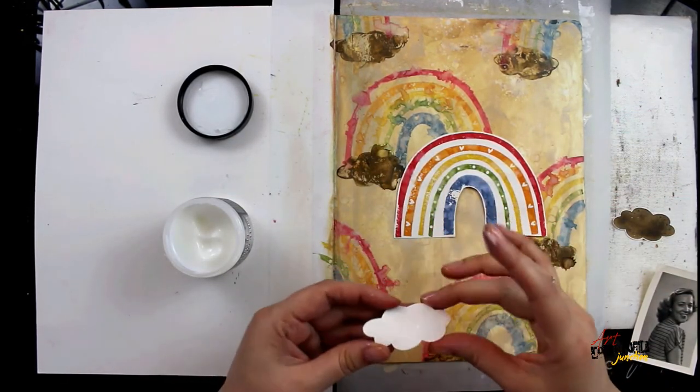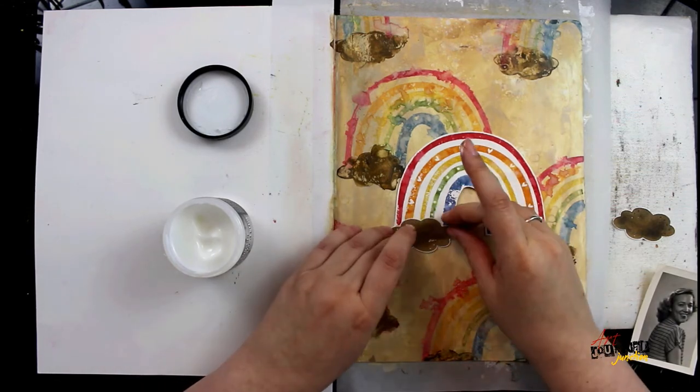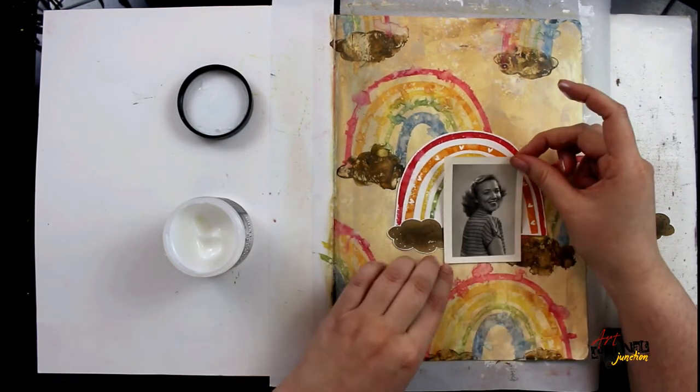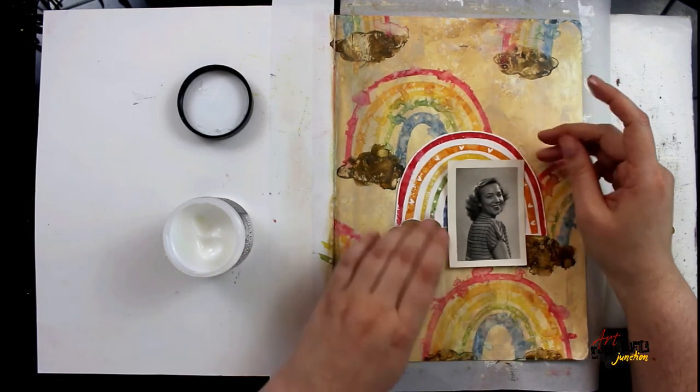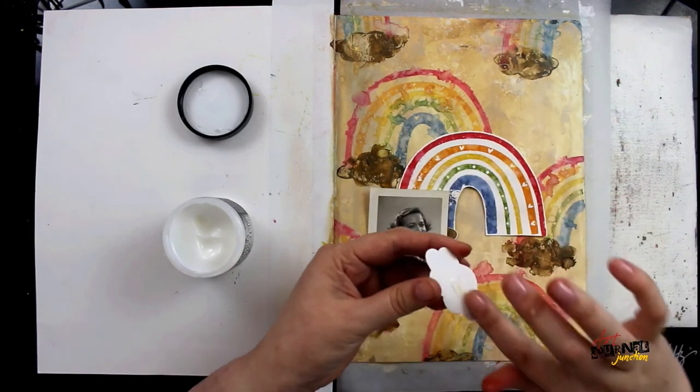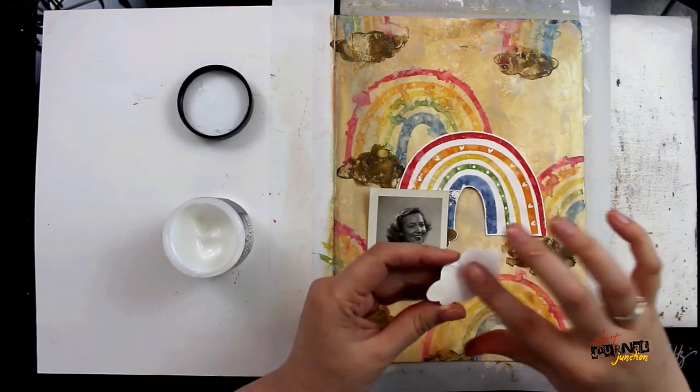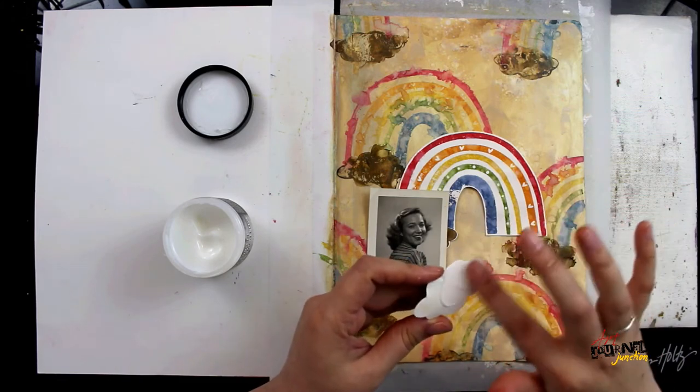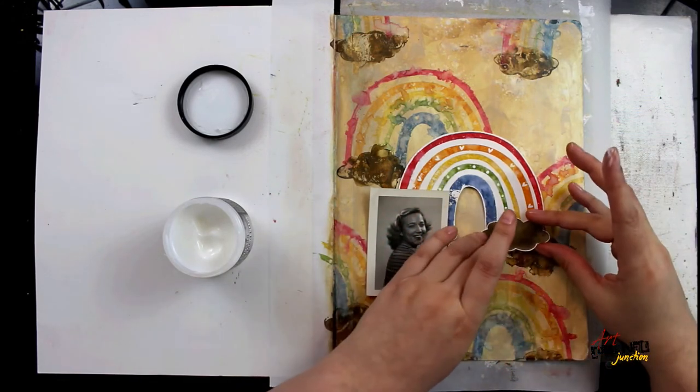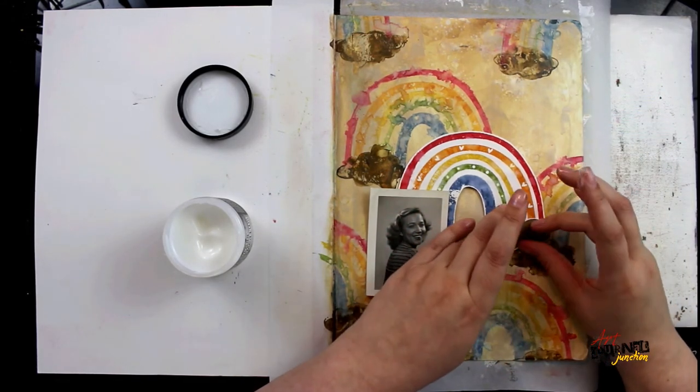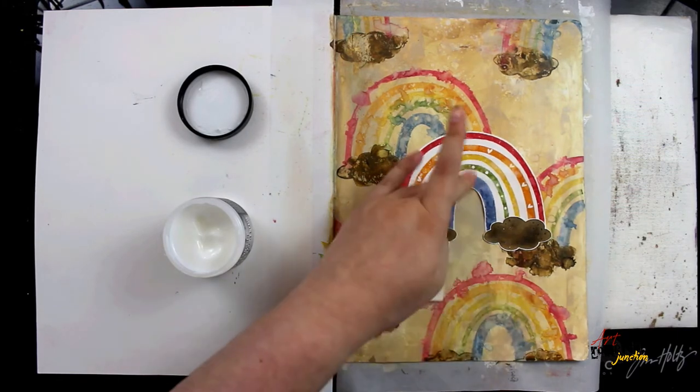I am cutting out all of the elements that I stamped with my Fiskars micro snip scissors and I'm gluing them onto my page with distress collage medium. I'm applying the glue with my finger, but you could also use a brush if you feel more comfortable doing it that way.